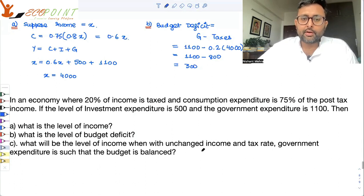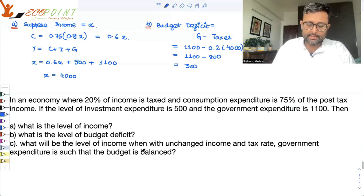What will be the level of income with unchanged income and tax rate? Government expenditure is such that the budget is balanced. So, if the government's budget is balanced, that means government's income is equal to government's expenditure.